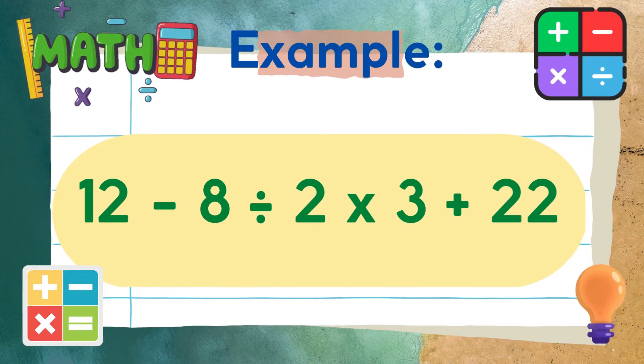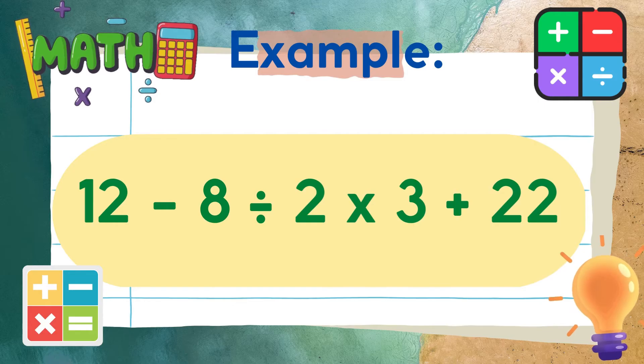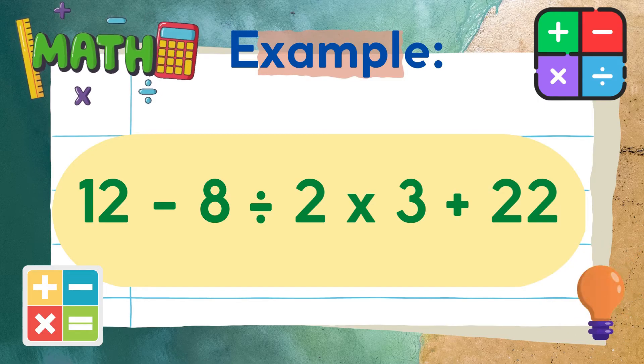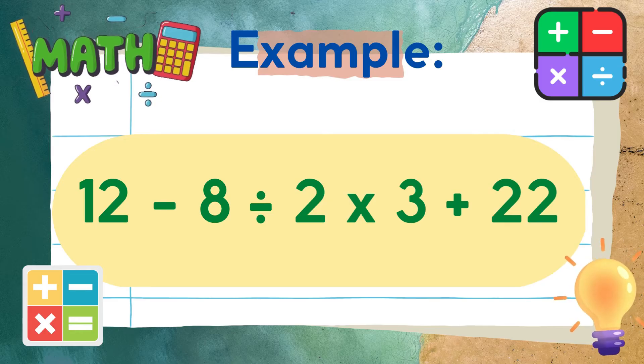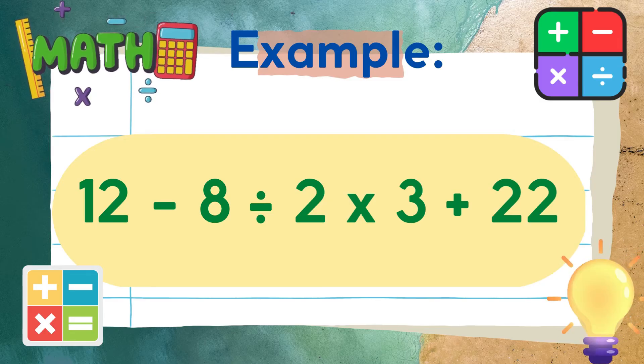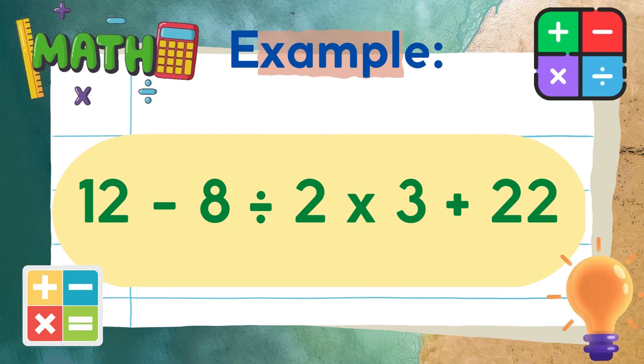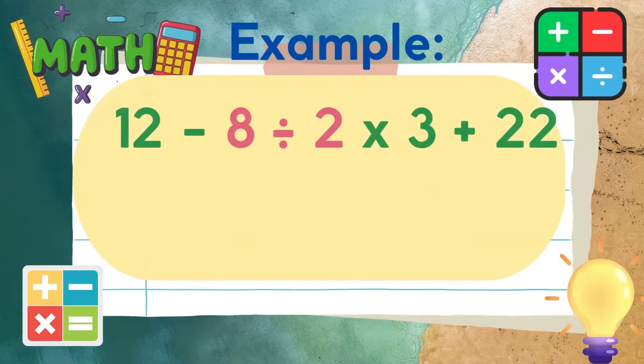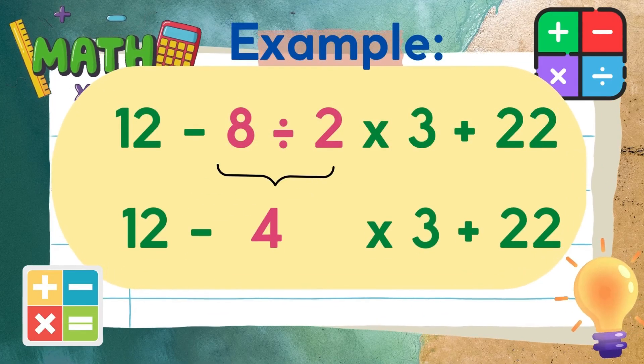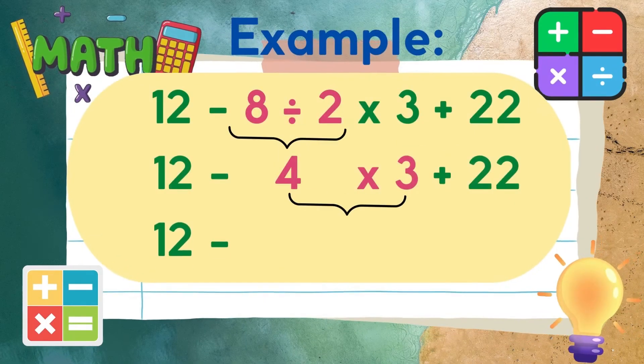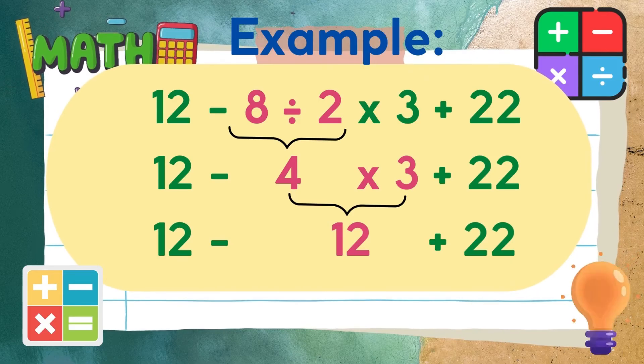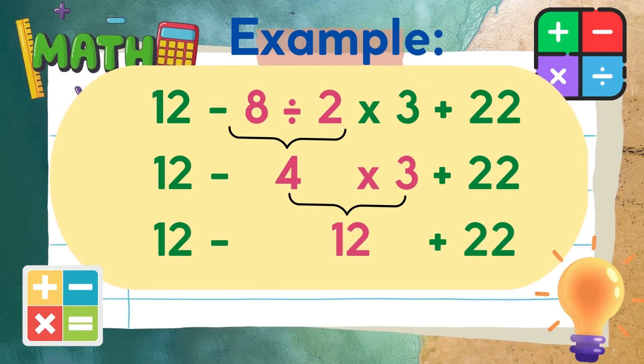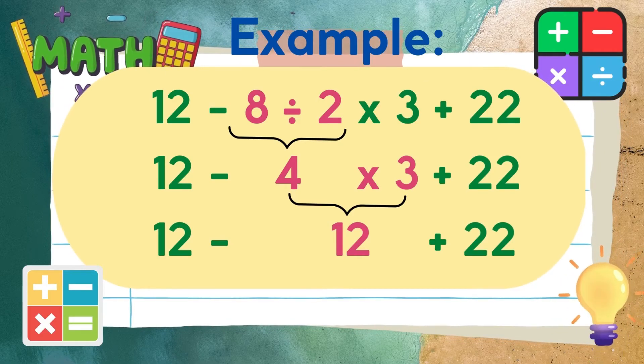Perform first all the operations of multiplication and division, whichever comes first from left. Then add and subtract, same as the order from left. So 8 divided by 2 is equal to 4. Then multiply it by 3. 4 times 3 is equal to 12. We are all done with the operations of multiplication and division.